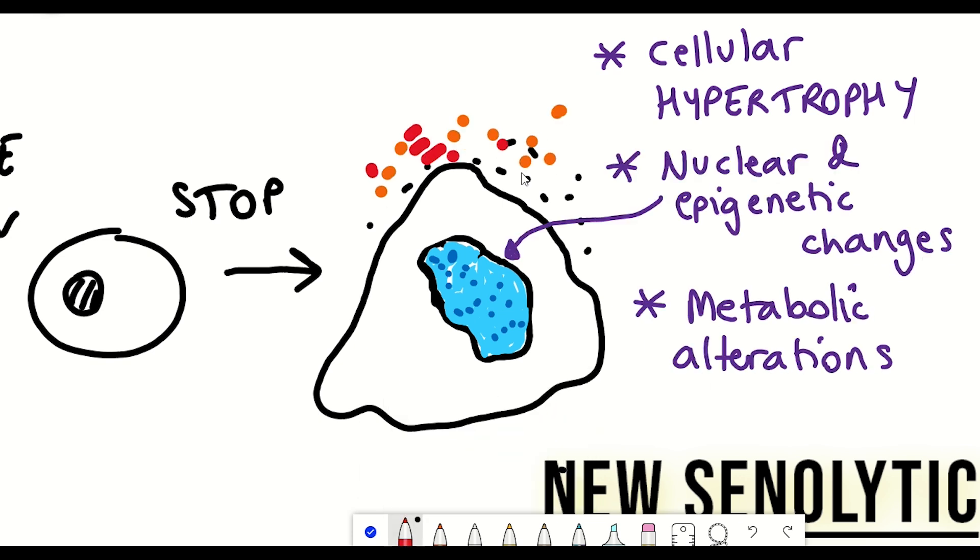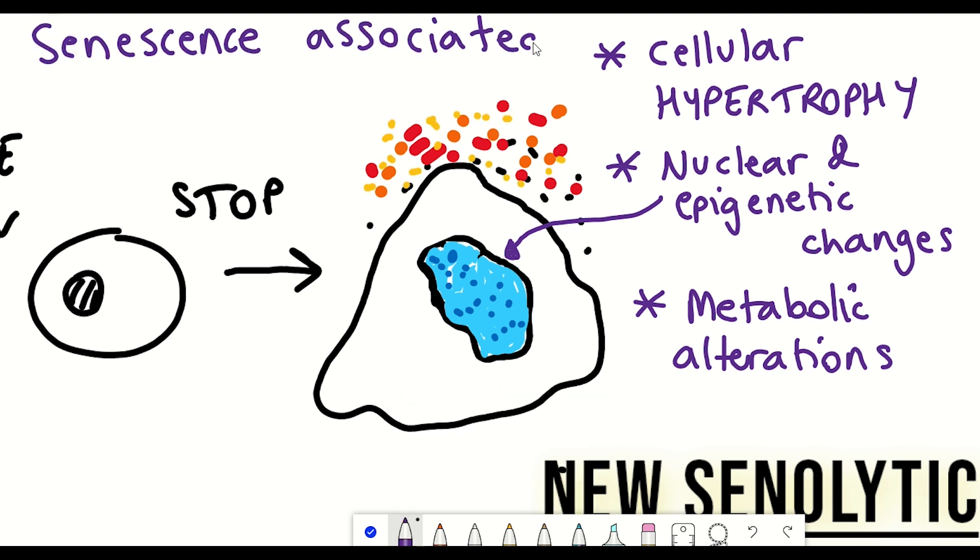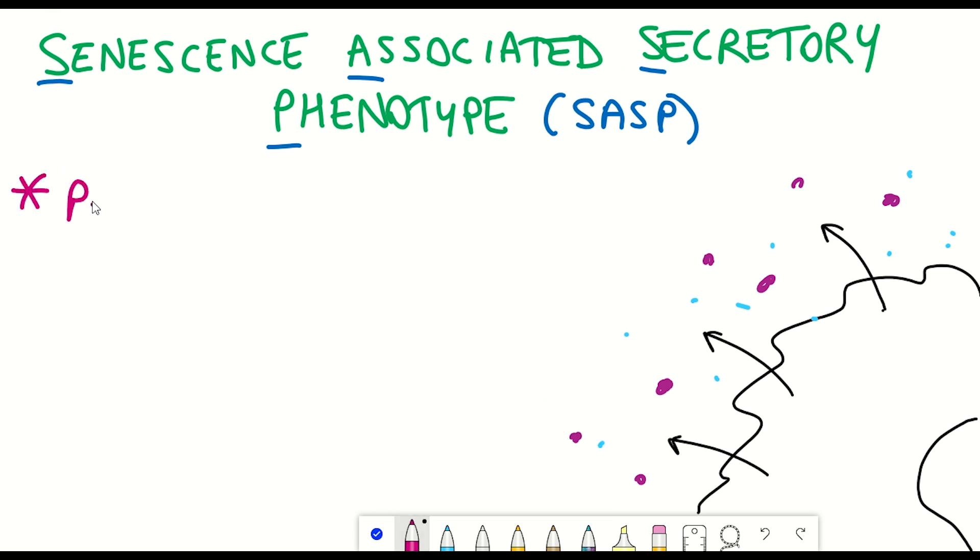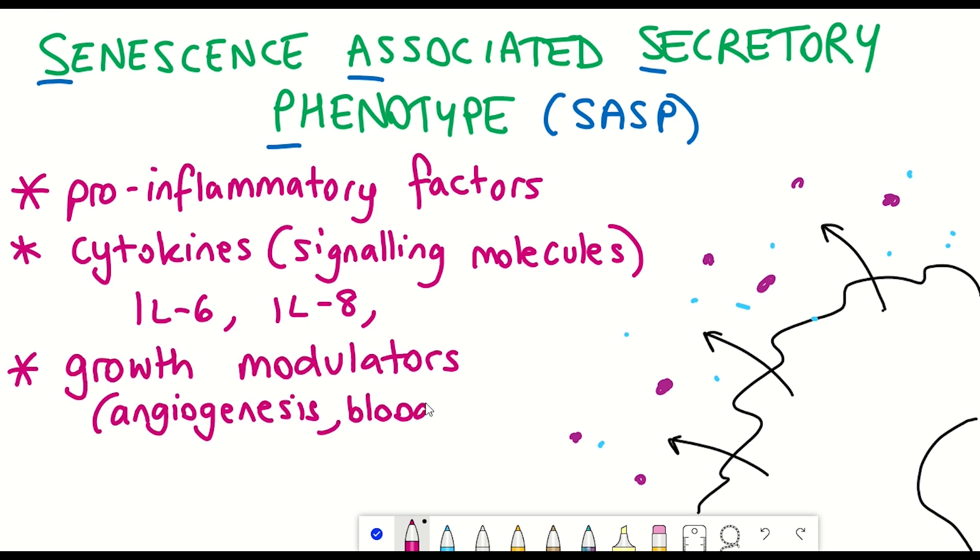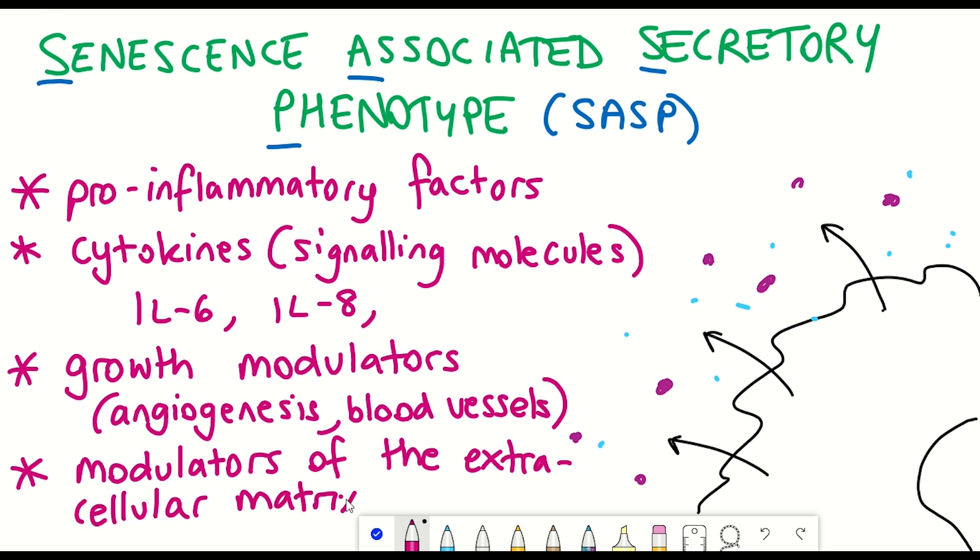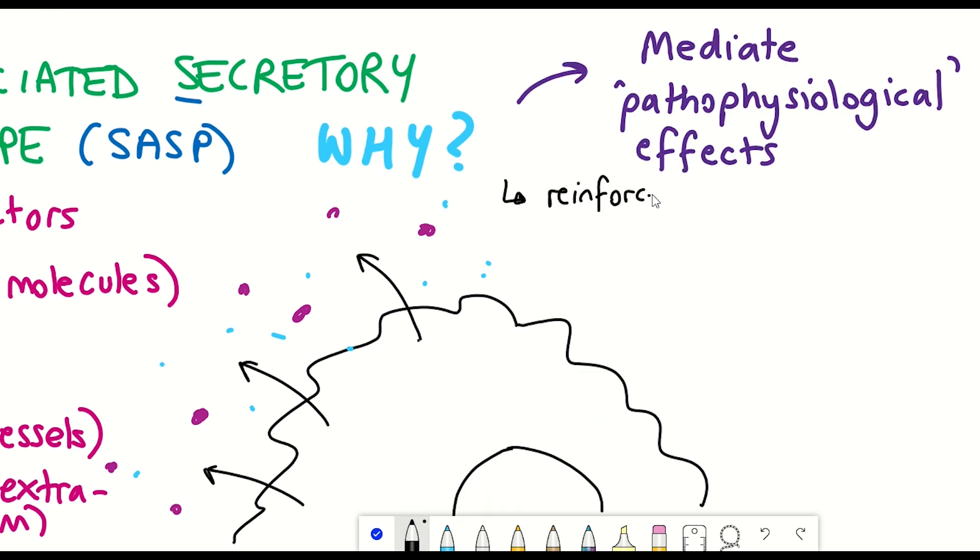Moreover, they develop the so-called senescence-associated secretory phenotype. And this describes how senescent cells start secreting a variety of different biologically active molecules. And these include a variety of different inflammatory factors and growth factors that can impact the surrounding environment of the senescent cells. And so we currently think that senescent cells have this so-called SASP to help mediate the pathophysiological effects. And so what that describes is the fact that these inflammatory factors help to reinforce and spread senescence to surrounding cells.